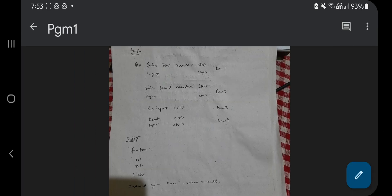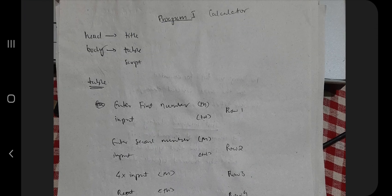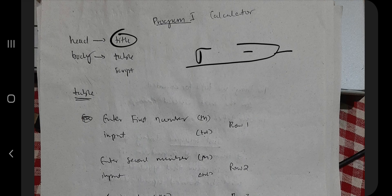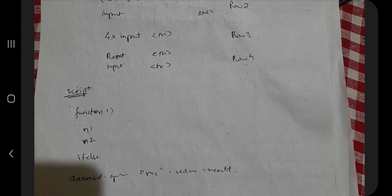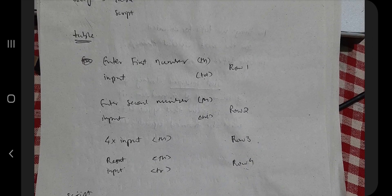To remember this structure: the program has a head and a body. In head we have the title, which shows 'JavaScript Calculator'. In the body we have two further parts — table and script. In the table, four things will be there, meaning four rows.